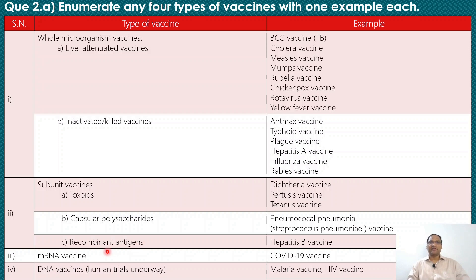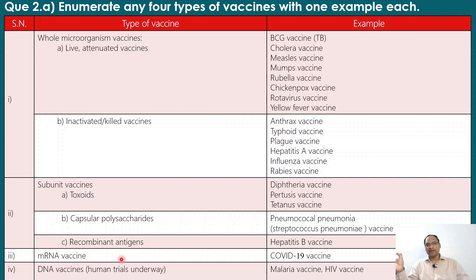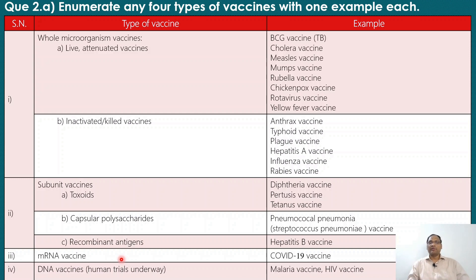The third type of vaccine is the mRNA vaccine. In mRNA vaccines, mRNA itself is inserted into the host, which then produces a specific antigenic protein, and the body produces antibodies against that antigen. This type of vaccine elicits both humoral and cell-mediated immunity. An example is the COVID-19 vaccine, which was based on mRNA.